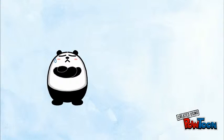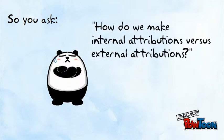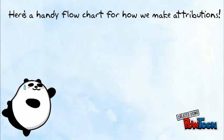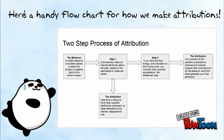So you ask, how do we make internal attributions versus external attributions? Here's a handy flowchart for how we make attributions.